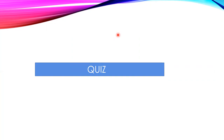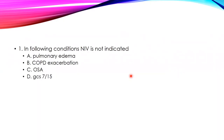Quiz question 1: In which of the following conditions is NIV not indicated? Options include various conditions, with option D being GCS of 7 out of 15.